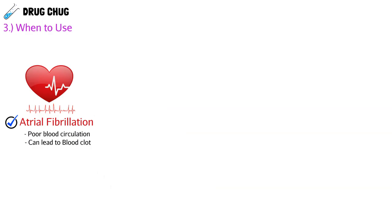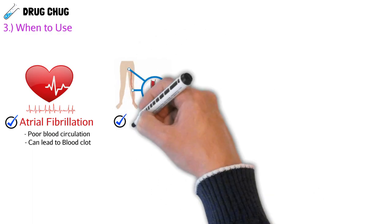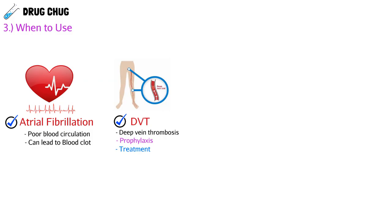Now let's talk about when we actually use these drugs. The first indication is atrial fibrillation — an irregular heartbeat where the atria aren't pumping correctly, leading to poor blood flow and risk of clot formation. The next indication is deep vein thrombosis (DVT), a blood clot in a deep vein usually in the leg. We have two dose strategies: prophylaxis (they don't have one yet) or treatment (they currently have one).